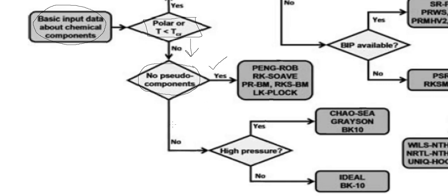If pseudo components are present — meaning 'No' here indicates pseudo components are present — then we need to check whether it is a high pressure or low pressure system. If it is a high pressure system, we select Chao-Seader, Grayson-Streed, or BK10. If it is a low pressure or vacuum system, we select Ideal or BK10.